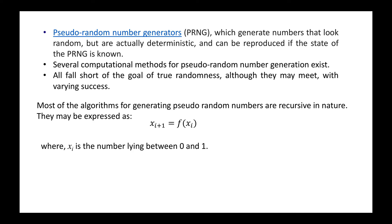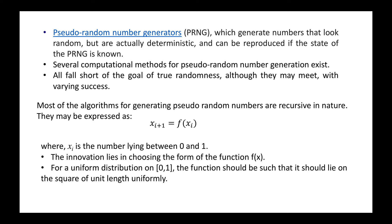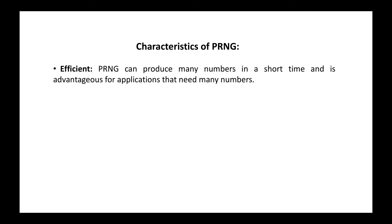Most algorithms for generating pseudo random numbers are recursive in nature and can generally be expressed as: x_(i+1) = f(x_i), where x_i is a number lying between 0 and 1. This recursive equation gives you a random number in the range of 0 and 1. For a uniform distribution of random numbers lying between 0 and 1, the function should produce values uniformly distributed over a unit square.